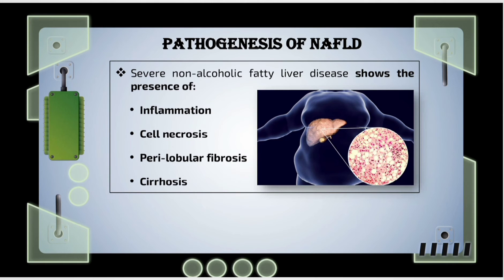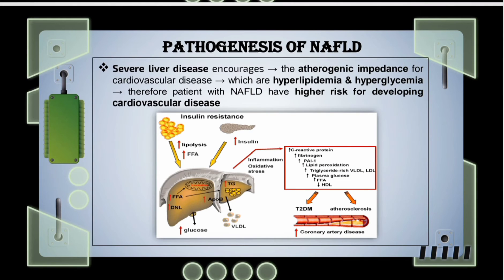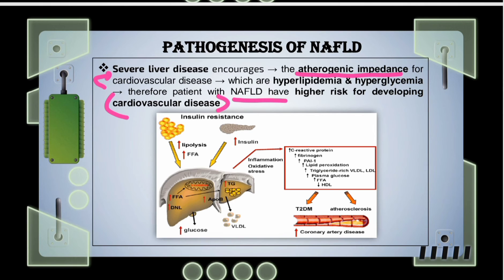If NAFLD is not controlled or treated in the early stage, it can progress to show inflammation, cell necrosis, perilobular fibrosis, and ultimately cirrhosis — which is irreversible scarring of hepatocytes. NAFLD carries a higher risk for the development of cardiovascular diseases, as severe liver disease — a consequence of NAFLD — can encourage atherogenic pathways via hyperlipidemia or hyperglycemia in patients with NAFLD.